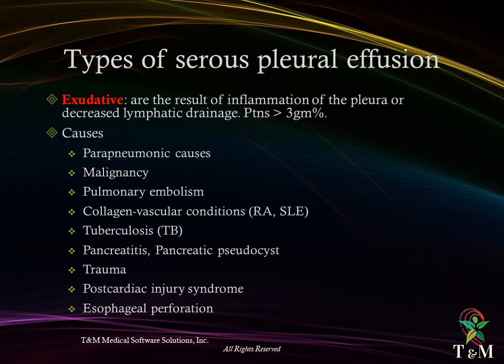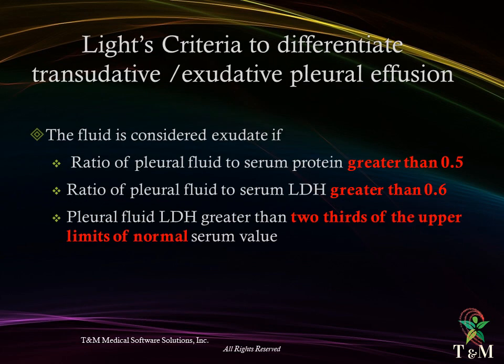Light's Criteria: the fluid is considered an exudate if the ratio of pleural fluid to serum protein is greater than 0.5, the ratio of pleural fluid to serum LDH is greater than 0.6, or pleural fluid LDH is greater than two-thirds of the upper limit of normal serum value.